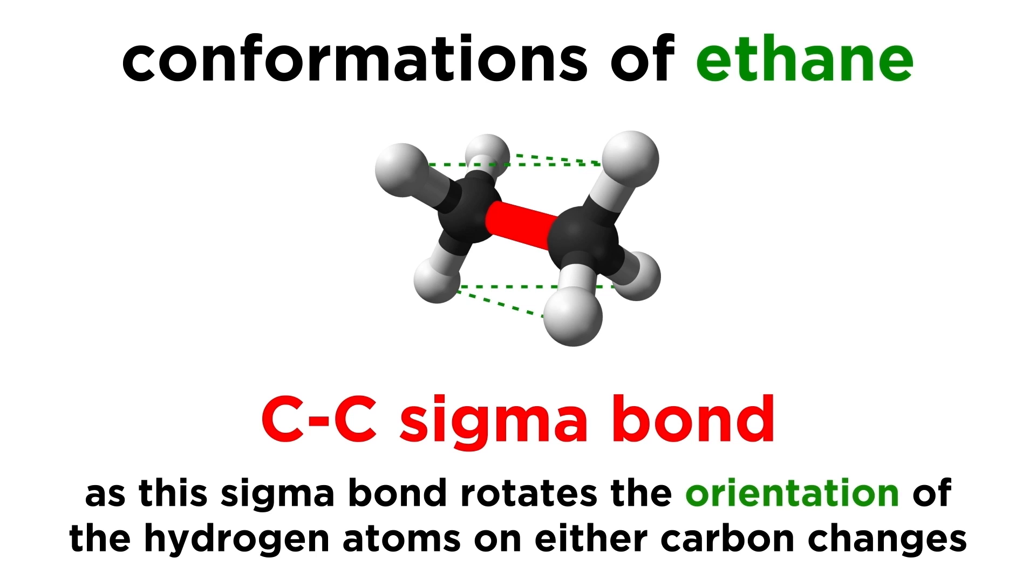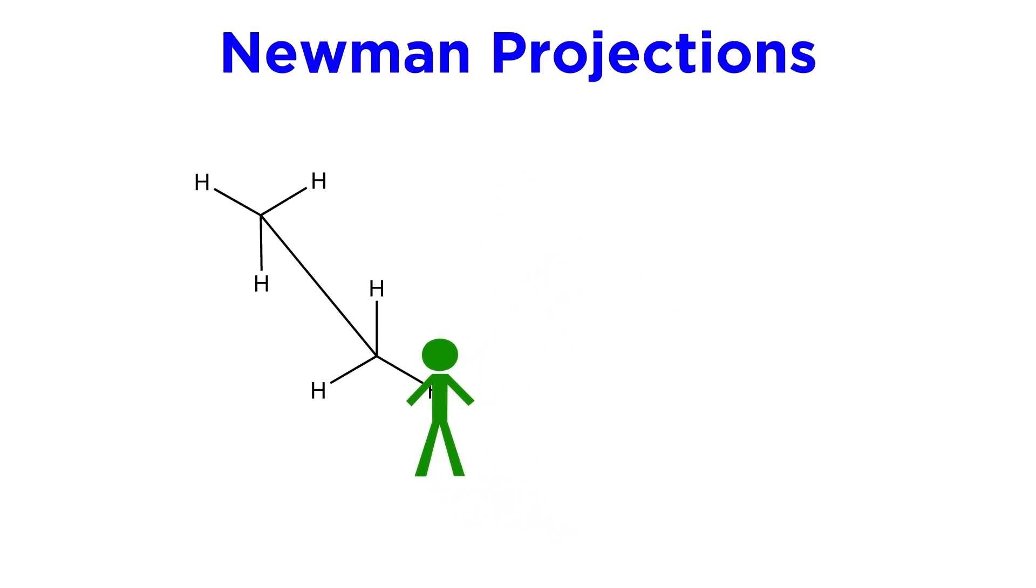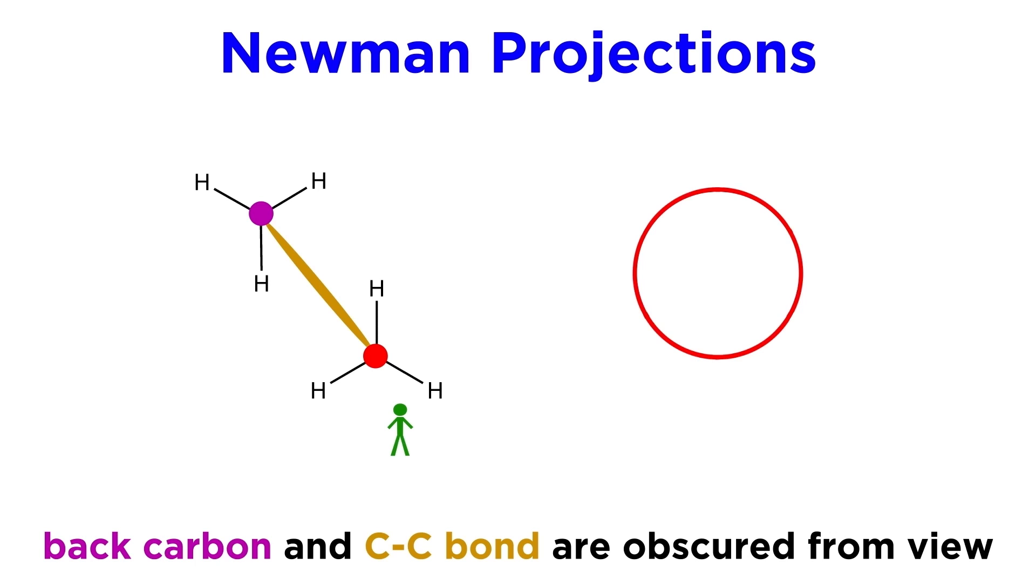In order to analyze these conformations, we have to be able to draw something called a Newman projection. Here we will visualize ourselves as being very tiny, sitting in front of this carbon atom, and looking directly down this carbon-carbon bond. This circle represents the front carbon, and the back carbon, along with the carbon-carbon bond, are obscured from view.